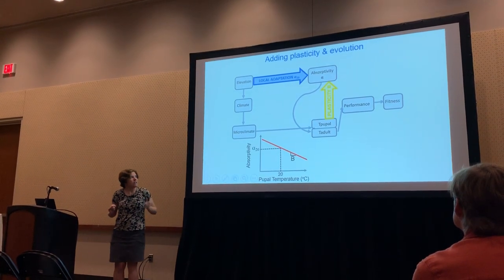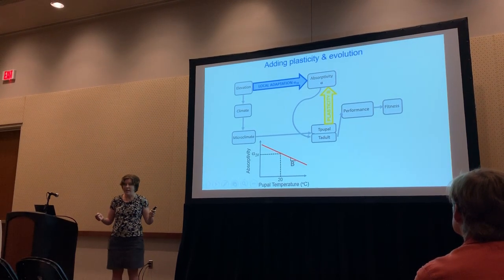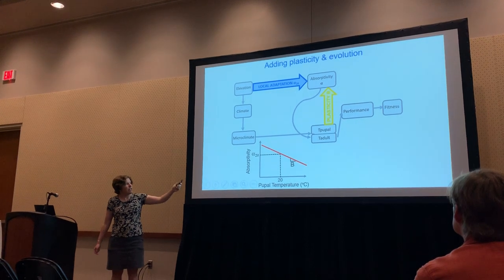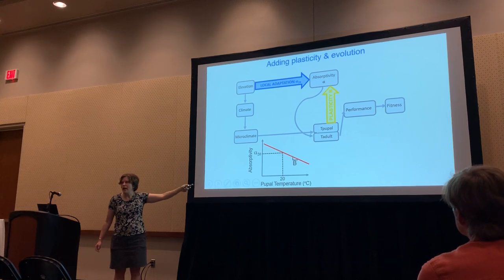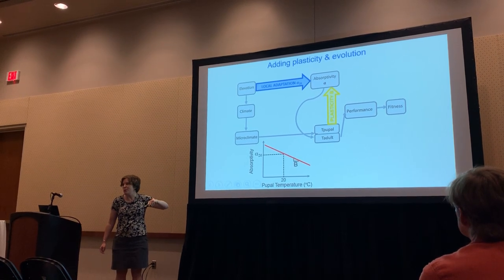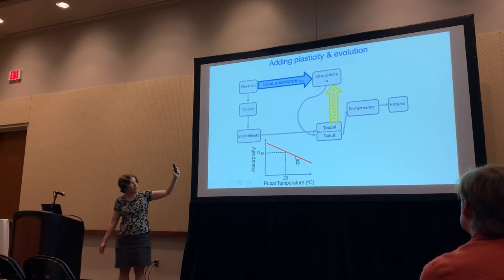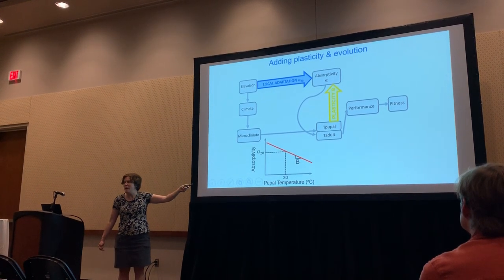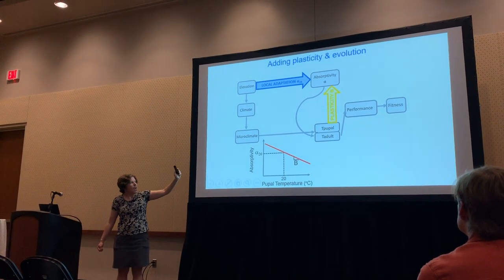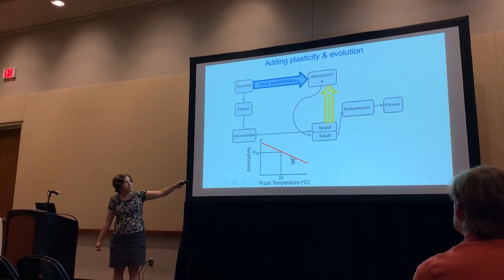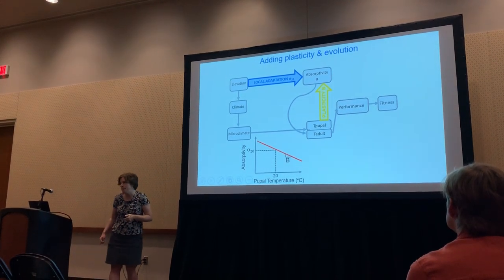Absorptivity is also plastic. In lab measurements, pupal temperature influences wing absorptivity: warm pupal temperatures lead to decreased absorptivity and less melanin in wings, since the butterflies are less likely to need to warm up as much. We characterize this as the absorptivity value at 20 degrees Celsius and also characterize the slope of this plasticity relationship.